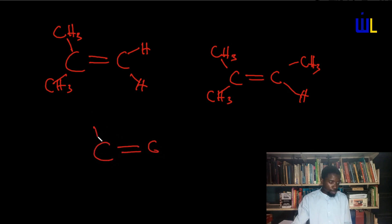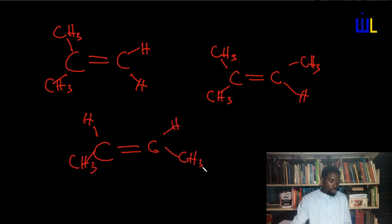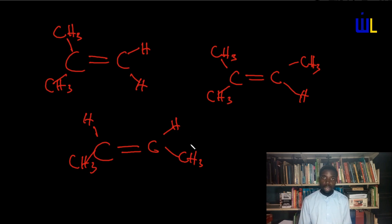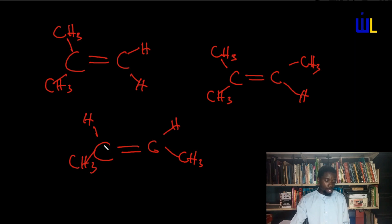In but-2-ene, you have hydrogen and methyl on one carbon of the double bond, and hydrogen and methyl on the other. You will notice that the carbon atoms of the double bond are each attached to two different species — hydrogen and methyl on each side. So it exhibits geometric isomerism. Finally, you check if there is a similar species between the two carbons: there is methyl and methyl, hydrogen and hydrogen — so there is at least one similar species.